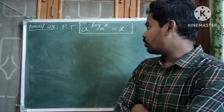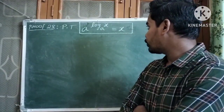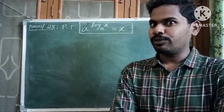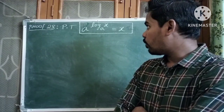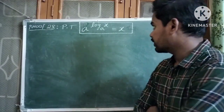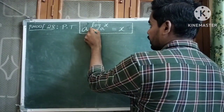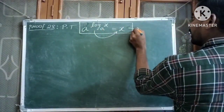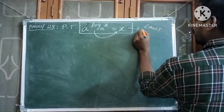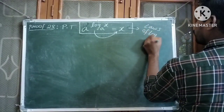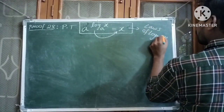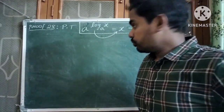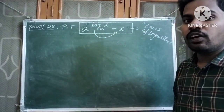We need to prove that a to the power log x to the base a is equal to x. This is a straightforward proof. You will see this formula in the laws of logarithms concept.